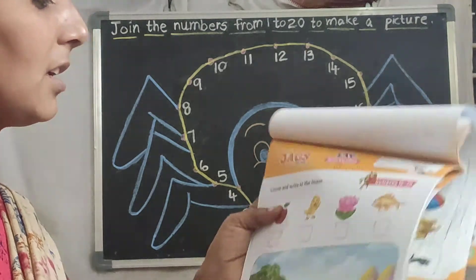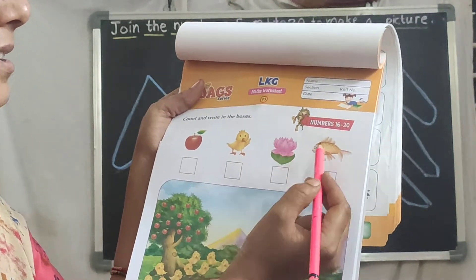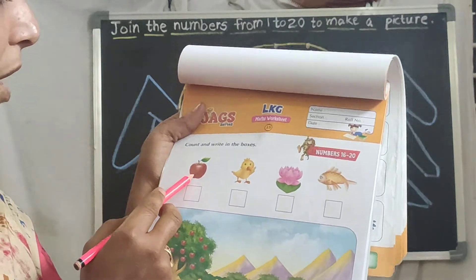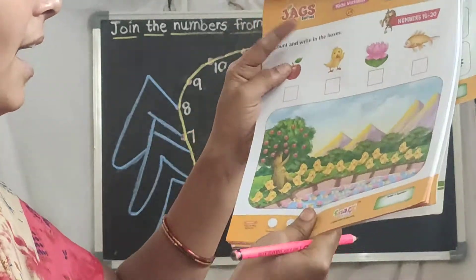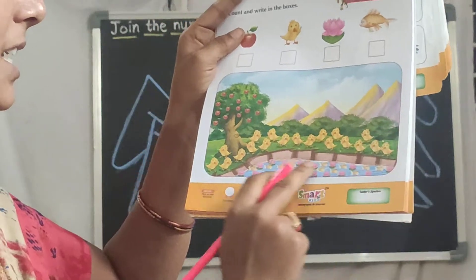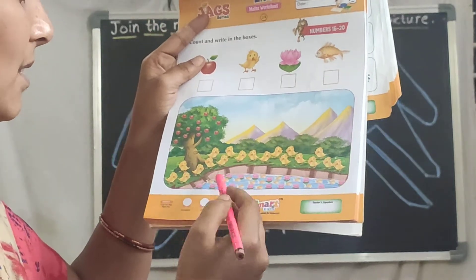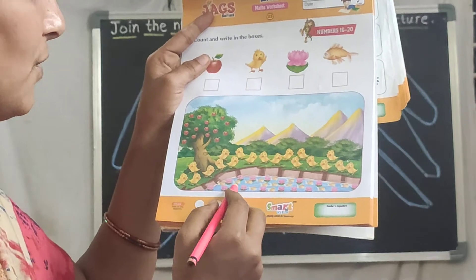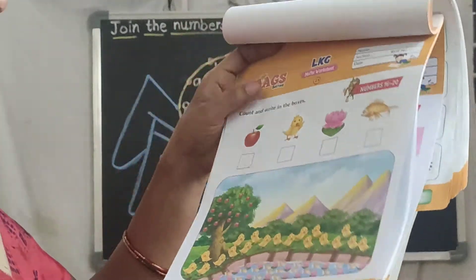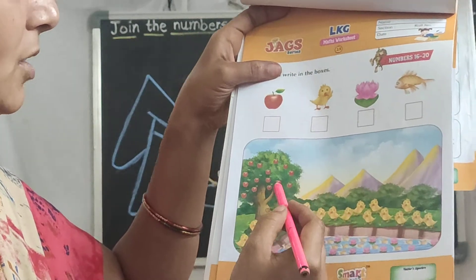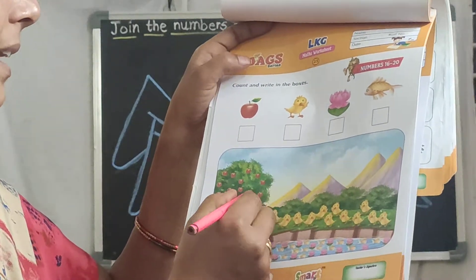Turn the page. Look here — you can see an apple, bird, flower, and fish. They gave 1 picture with boxes below it. Come down — here you can see a nature scene with an apple tree, some chicks, birds, fishes, and flowers. You should count each type and write the number in the box.